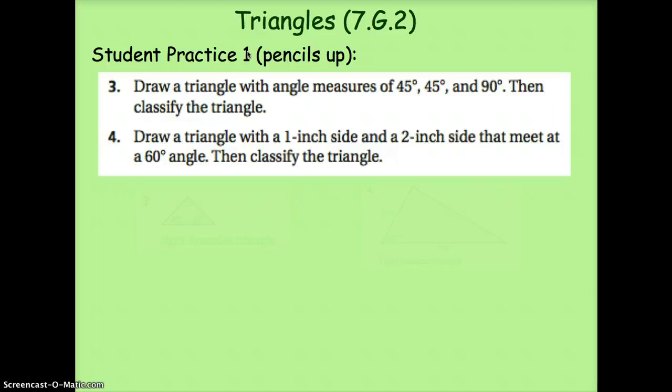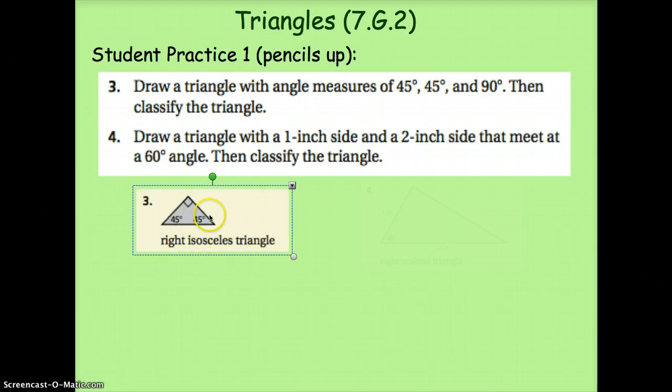Okay, welcome back. Let's go ahead and take a look at your triangles. I'll bring those up here. Number three is a right isosceles triangle, 45-45-90. And you would have known without even drawing it, you could see that it had to be isosceles because two angles are the same, so therefore two sides are going to be the same. And one angle is 90, so you know it has to be a right angle.